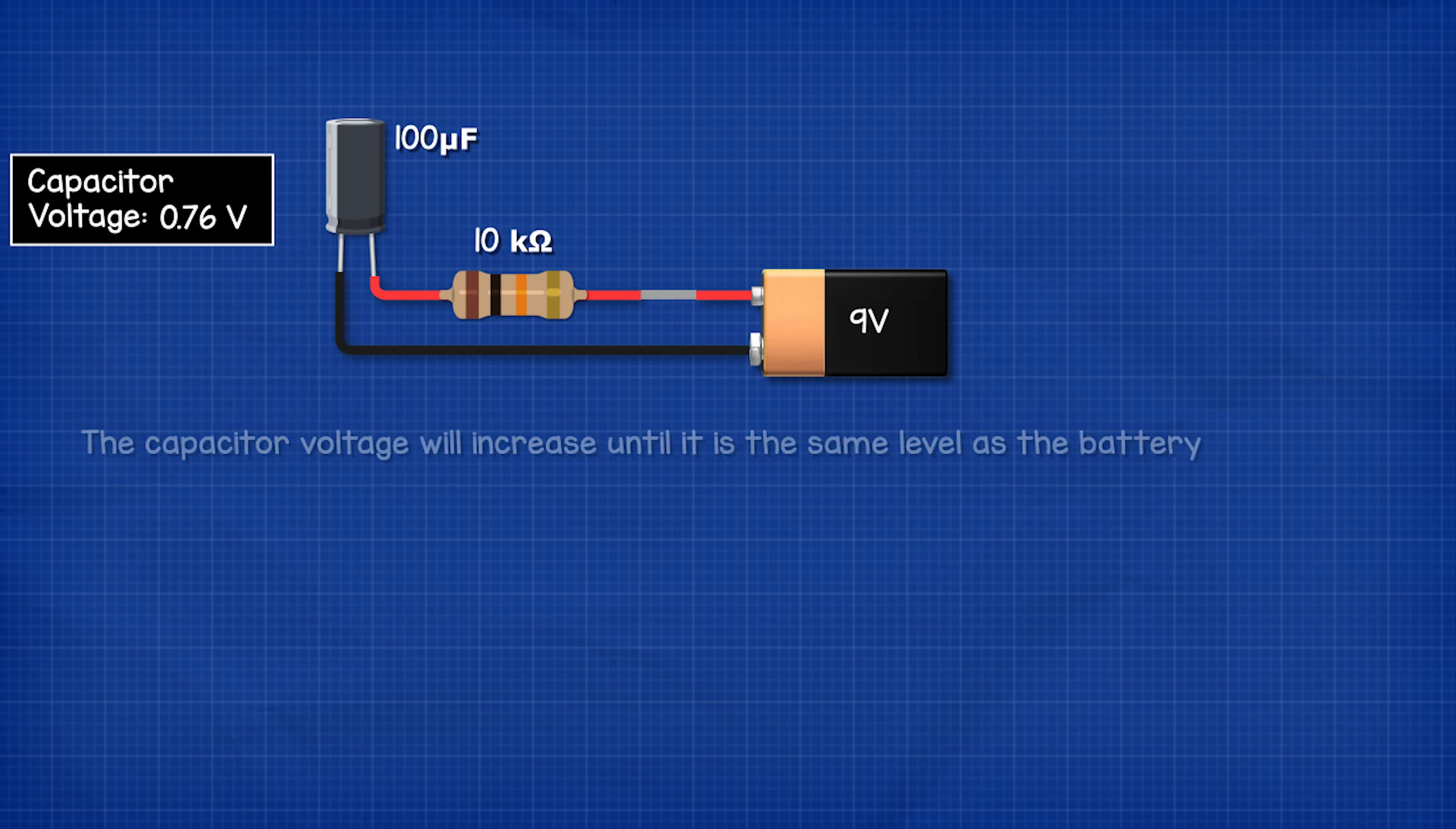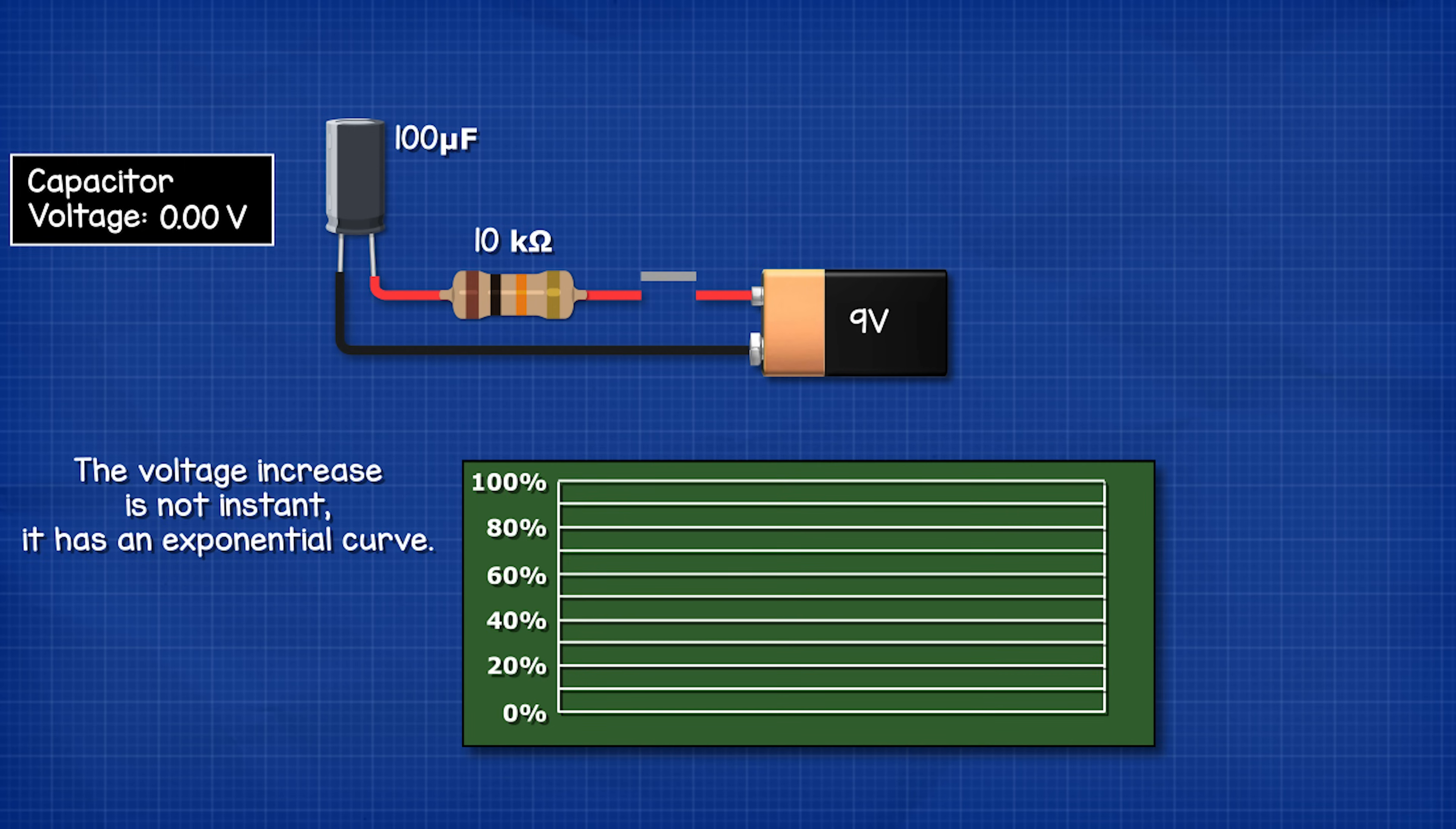When we close the switch the capacitor will charge. The voltage will increase until it is the same level as the battery. The voltage increase is not instant, it will have an exponential curve.